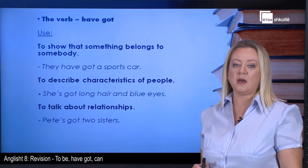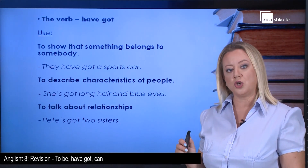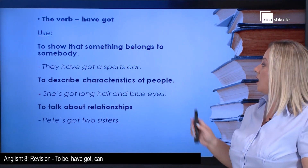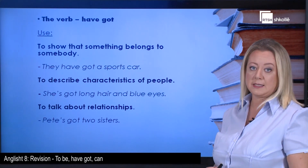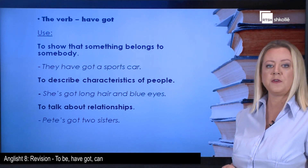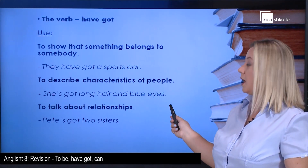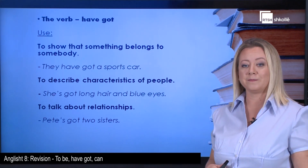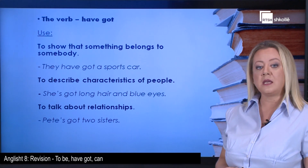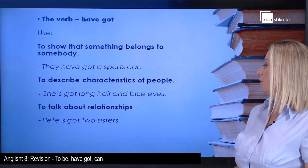Now let's see the verb have got. When do we use it? First, to show possession — that something belongs to somebody. For example: They have got a sports car. Second, to describe characteristics, often physical ones: She's got long hair and blue eyes, I've got blue eyes too. Third, to talk about relationships: Pete has got two sisters. Note the contracted forms of have got used here.